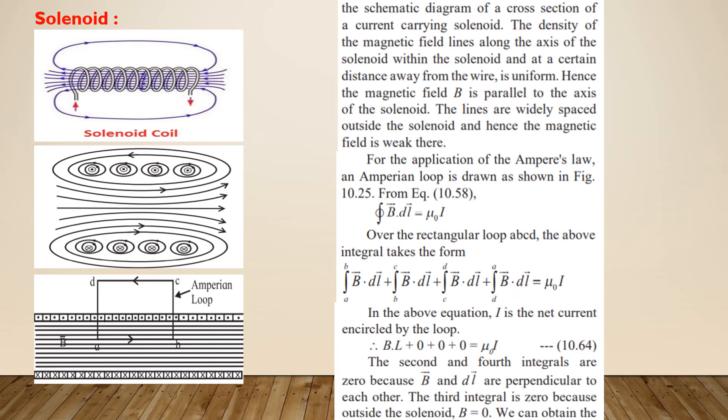Moving to the next application of Ampere's law, let us determine the magnetic field inside a solenoid. A solenoid is a type of electromagnet used to generate a controlled magnetic field through a coil wound into a tightly packed helix.